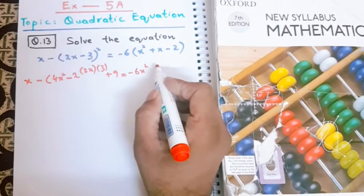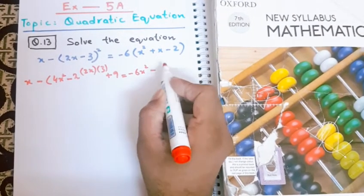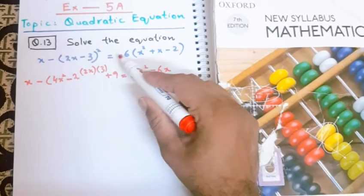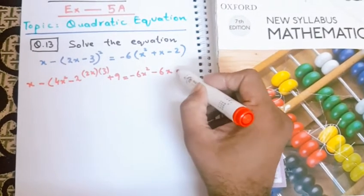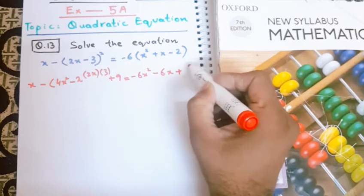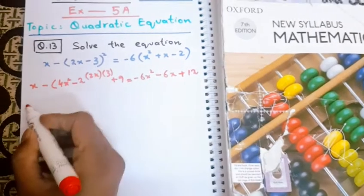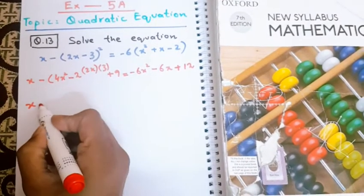Because of the minus outside of the bracket, this sign will be changed into negative, so it will become 6x. And because of this minus sign, this minus will be turned into positive. 6 times 2 is 12x, because of the minus sign.